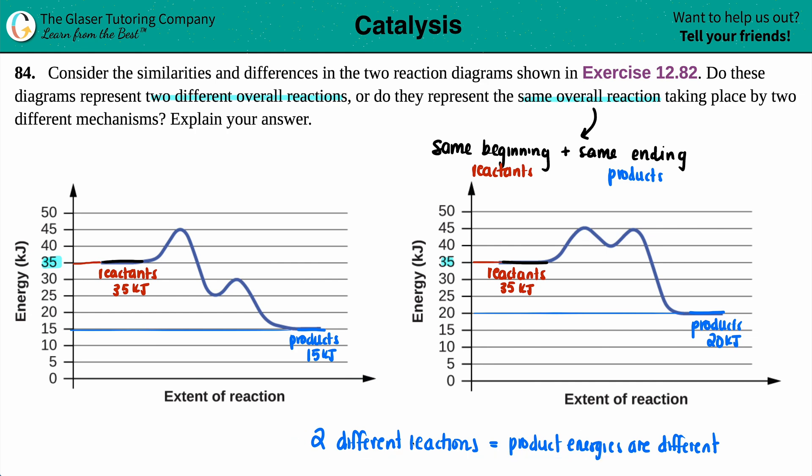So the product energies are different, and that's how you basically tell. So always shoot from the start to the end. If everything is the same from the start to the end, it's the same reaction. But if you have different values like we have here, it's got to be two different reactions. And that is the end for this question.